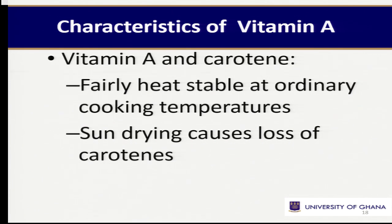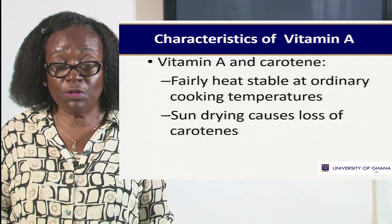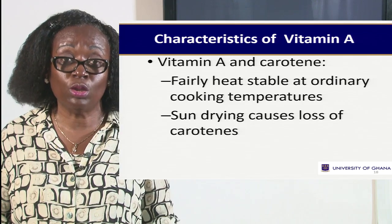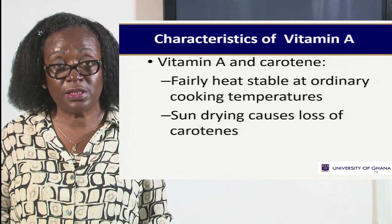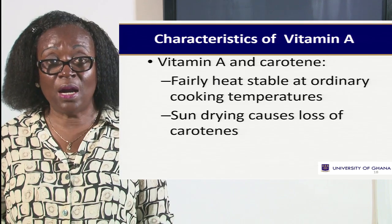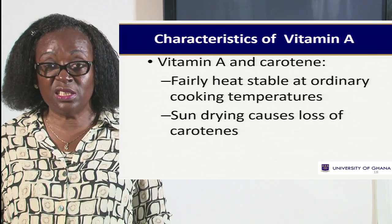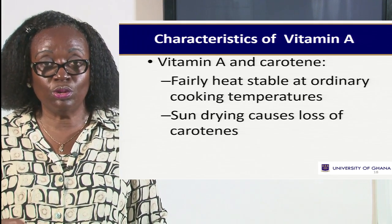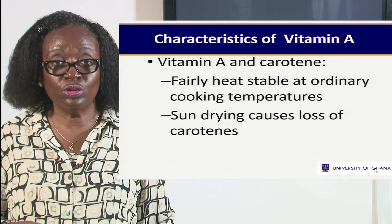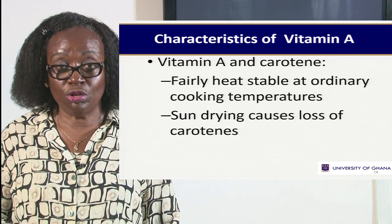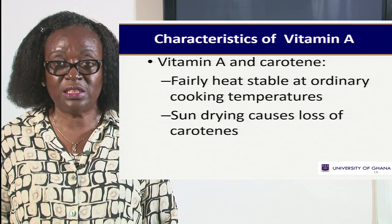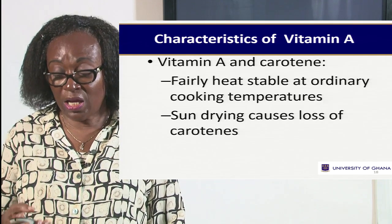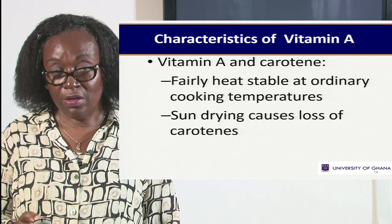Vitamin A is susceptible to extraordinary heat — too much heat can destroy it. When you put palm oil on fire for a very long time, the color changes, which means you've destroyed it. Similarly, when cooking kontomre or greens and the color changes from green, you've destroyed the provitamin A. So it is very important to cook on low heat, avoid long cooking periods. Sun drying also causes loss because leaves change color when dried.